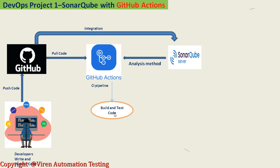The CI pipeline then reaches the build and test code stage, where the Maven build takes place. Wherever you are running your GitHub Actions — on Windows or Linux — you need to install Maven, and for Maven you need to install JDK. Whether you are using a self-hosted runner or a GitHub-hosted runner, you need three things set up on the machine: Java, Git, and Maven.